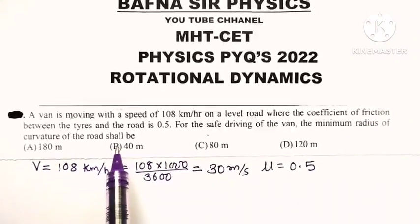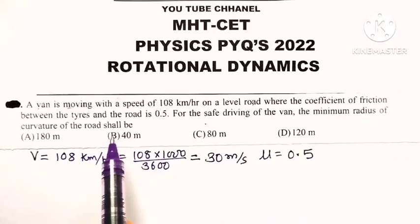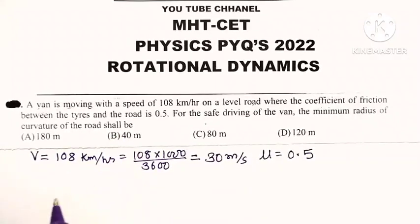For the road, we want to find the radius of curvature for safe driving. When a vehicle is performing circular motion, the necessary centripetal force required for circular motion is provided by the force of friction - static friction. The centripetal force is mv² divided by r.